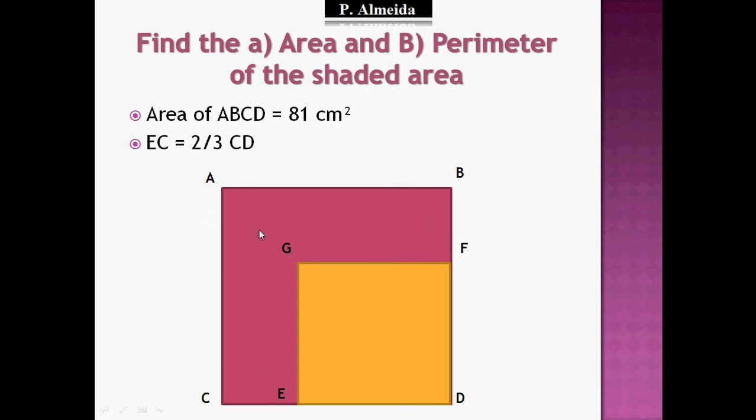So the only things that I tell you are that the area of ABCD, so the large shape, is 81 centimeters squared. And the other thing that I tell you is that the side EC is two-thirds of the side CD.